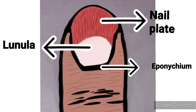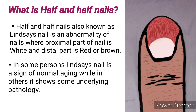The three parts are: eponychium, lunula, and nail plate. Eponychium is the skin proximal to the nail that covers the nail fold. Above that is the lunula, and distal to the lunula is the nail plate. So if someone asks what is half and half nail —